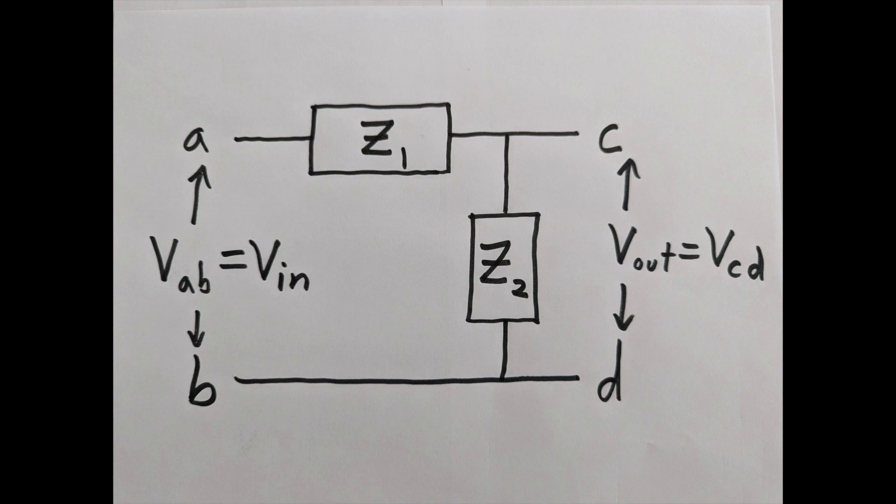Here's a standard template for a simple filter. Z1 and Z2 are impedances, we have a four terminal network. We'll plug in different impedances and see what we get for a filter in each case.